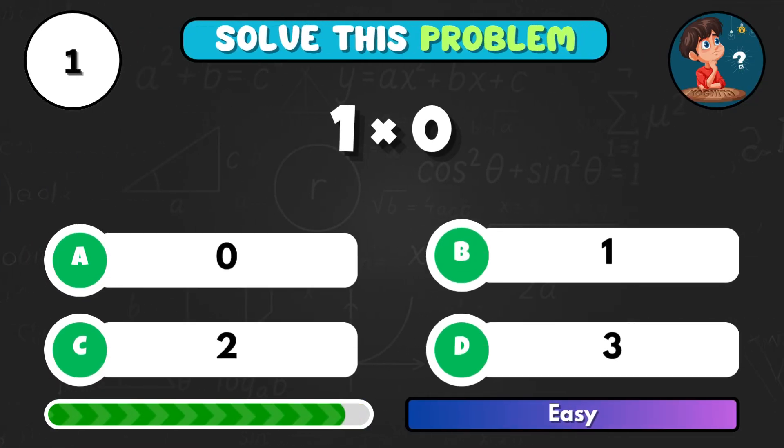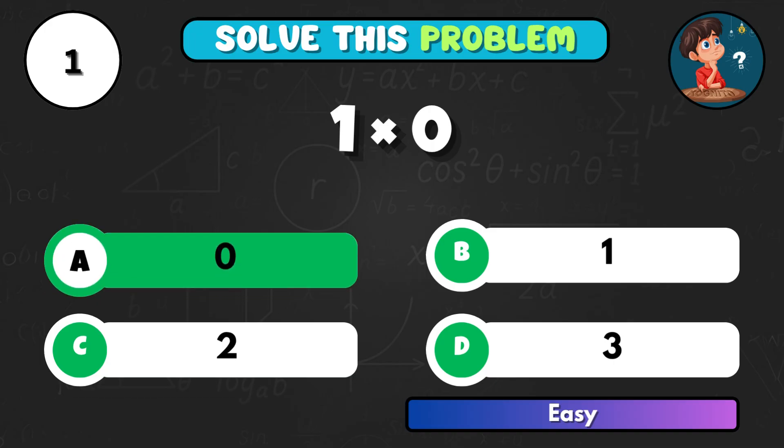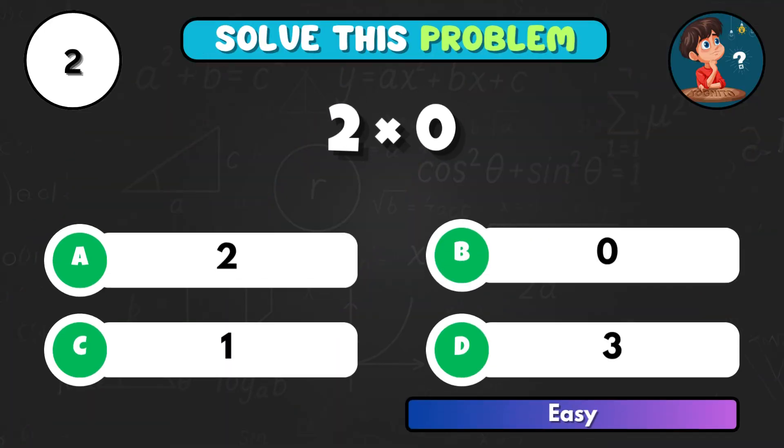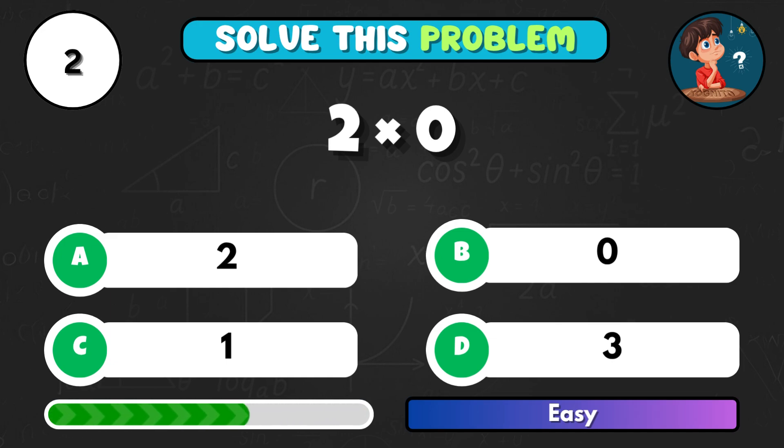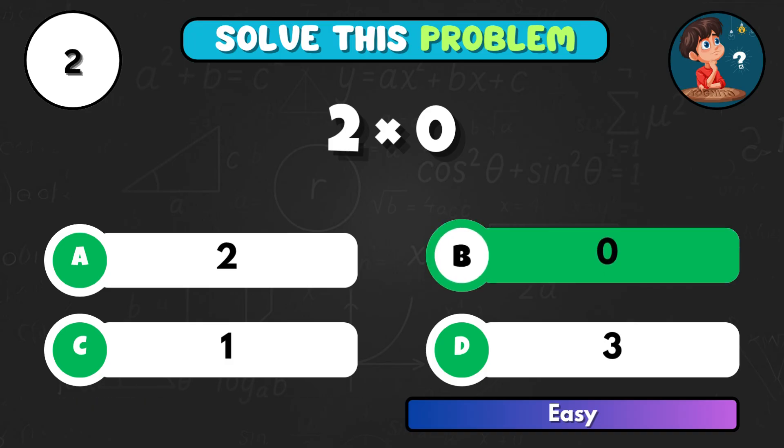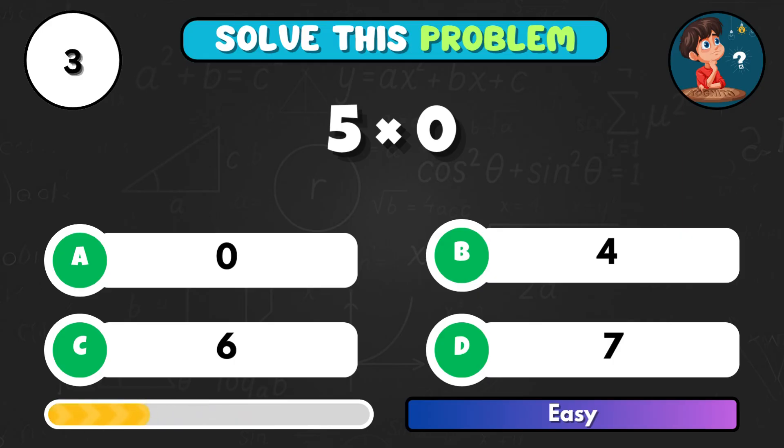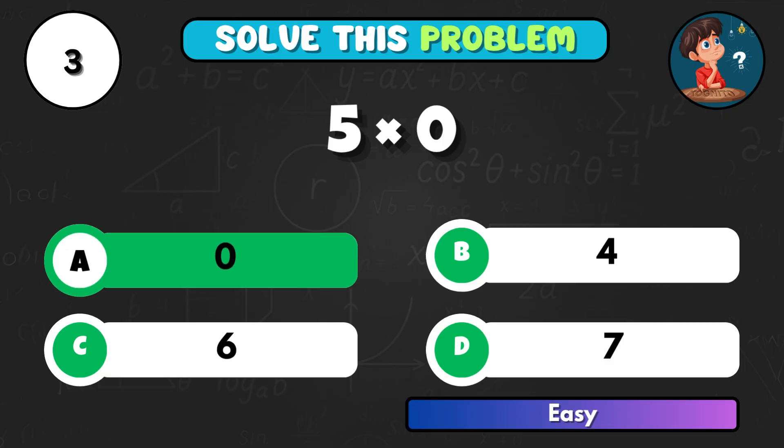Let's kick off with something simple. What is 1 times 0? Correct option A, the answer is 0. How about this? 2 times 0, what does that give you? Answer is B, another 0. Try this one, 5 multiplied by 0. Correct option A, still 0.